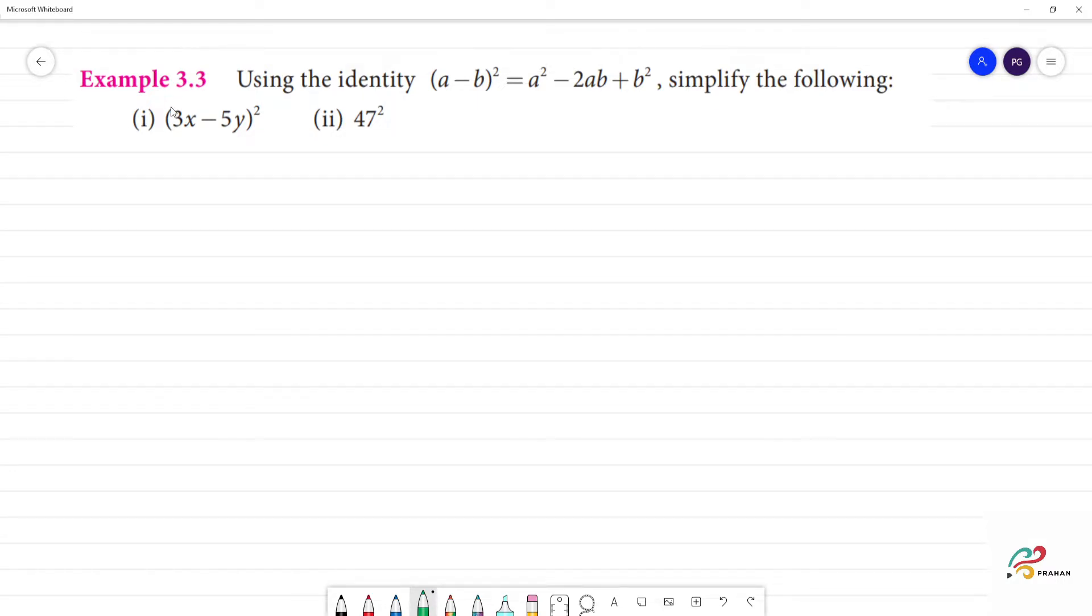Example 3.3: Simplify using the identity (a - b)² = a² - 2ab + b². Simplify the following. So our identity is (a - b)², then we have a² - 2ab + b². This is the formula.